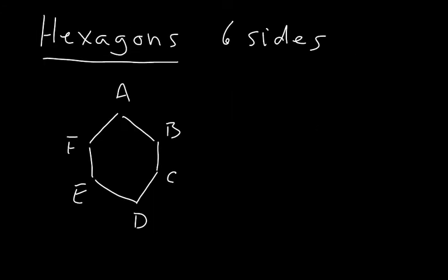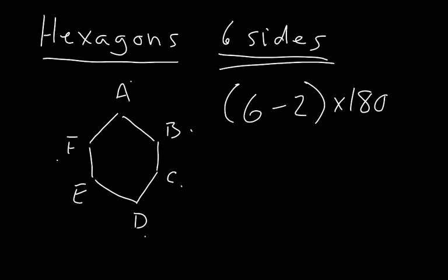One more example of the formula: we have a hexagon, it has six sides. You've got angles A, B, C, D, E, and F. With my formula, I have six sides. Six subtract two times 180. Six subtract two is four, times 180.